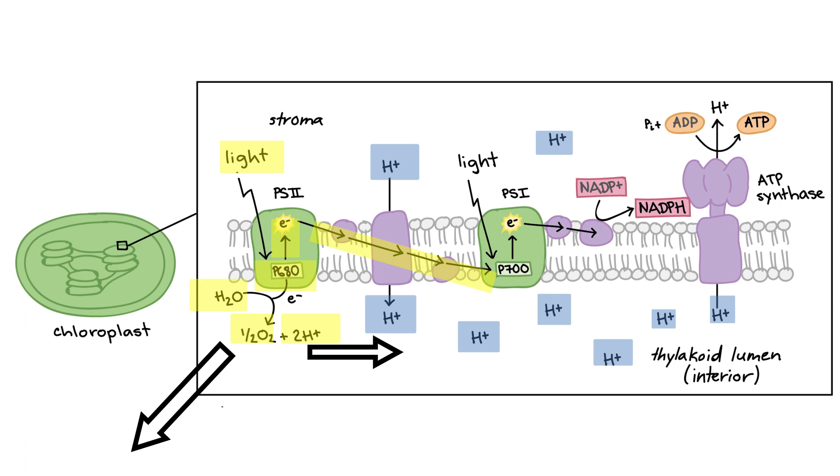These hydrogens don't want to be in the lumen. They're moving against their concentration gradient. To get back into the stroma, they flow through ATP synthase and turn this motor that jams a phosphate group onto ADP, making ATP.